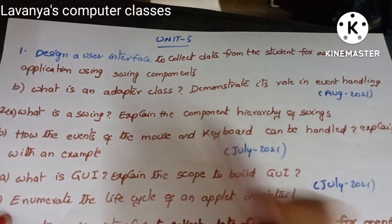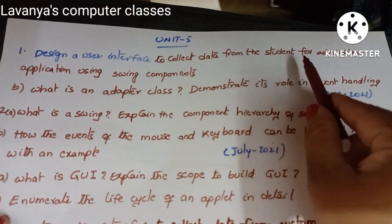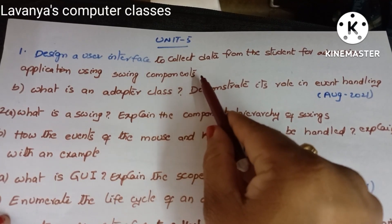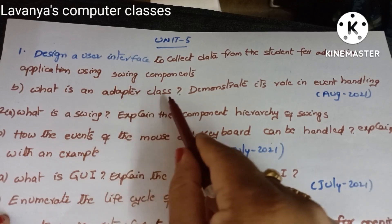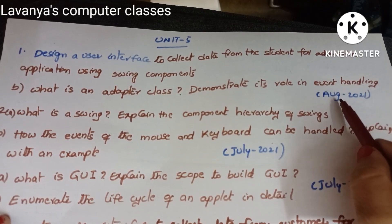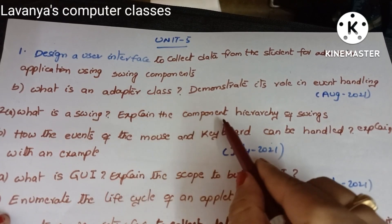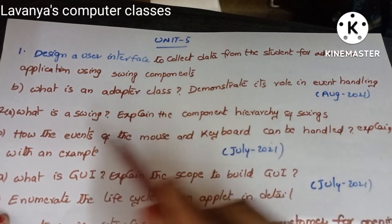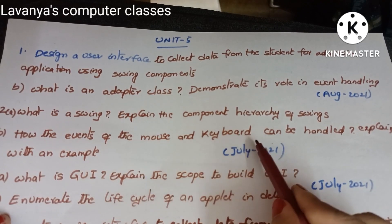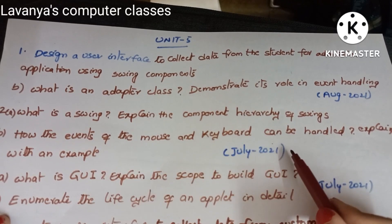Unit five questions: 'Design a user interface to collect data from a student for an admission application using Swing components.' 'What is an adapter class? Demonstrate its role in event handling' — August 2021. 'What is Swing? Explain the component hierarchy of Swing and how mouse and keyboard events can be handled — explain with an example' — July 2021.